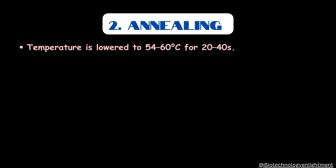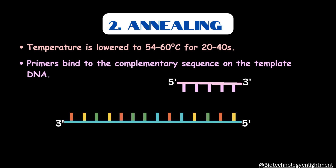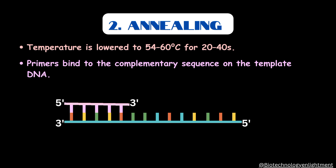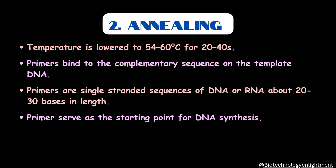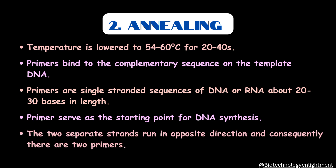The second step of PCR is annealing. In annealing, the temperature is lowered to 54 to 60 degrees Celsius for 20 to 40 seconds. In this step, primers bind to the complementary sequence of the template strand. Primers are single-stranded sequences of DNA or RNA about 20 to 30 base pairs in length, and they serve as the starting point for DNA synthesis. The two separate strands run in opposite directions, and consequently there are two primers involved in this process.